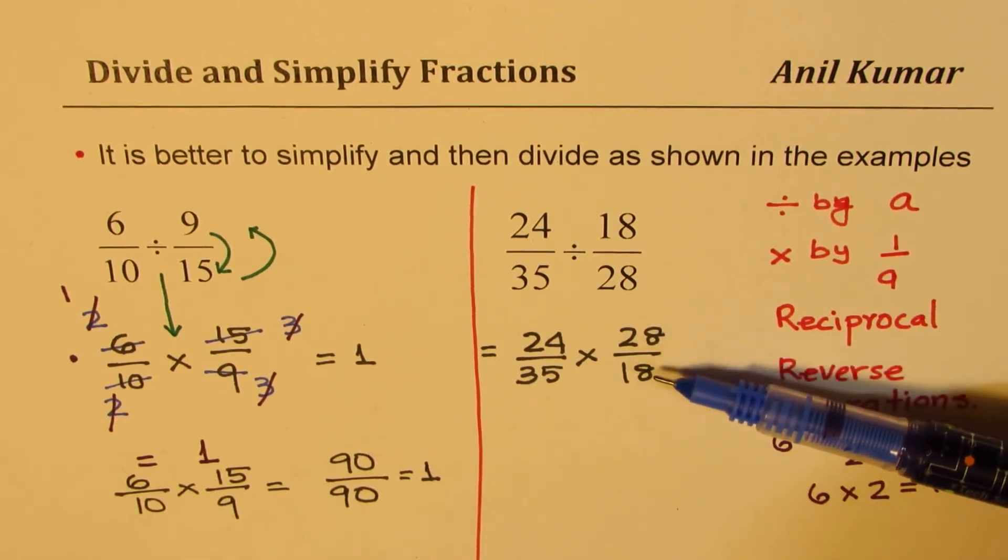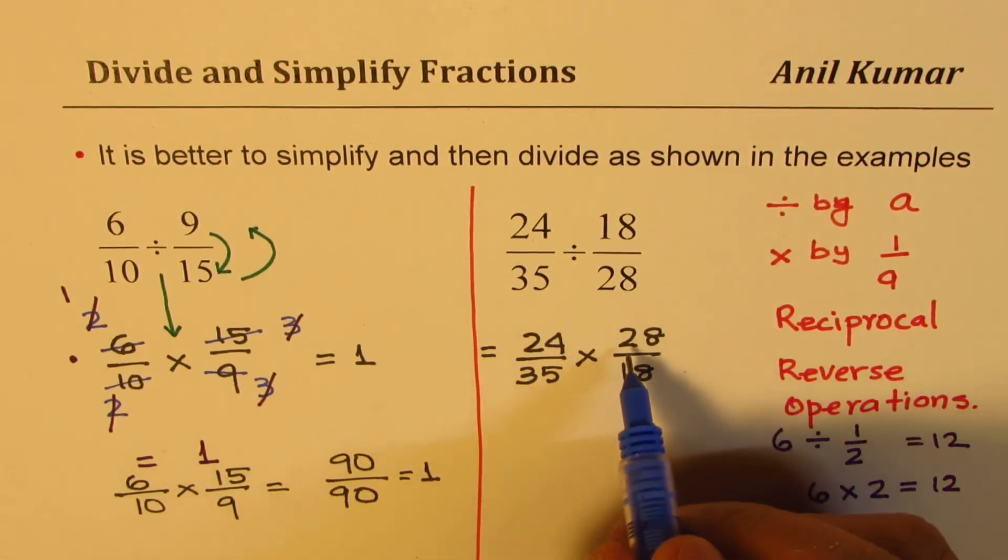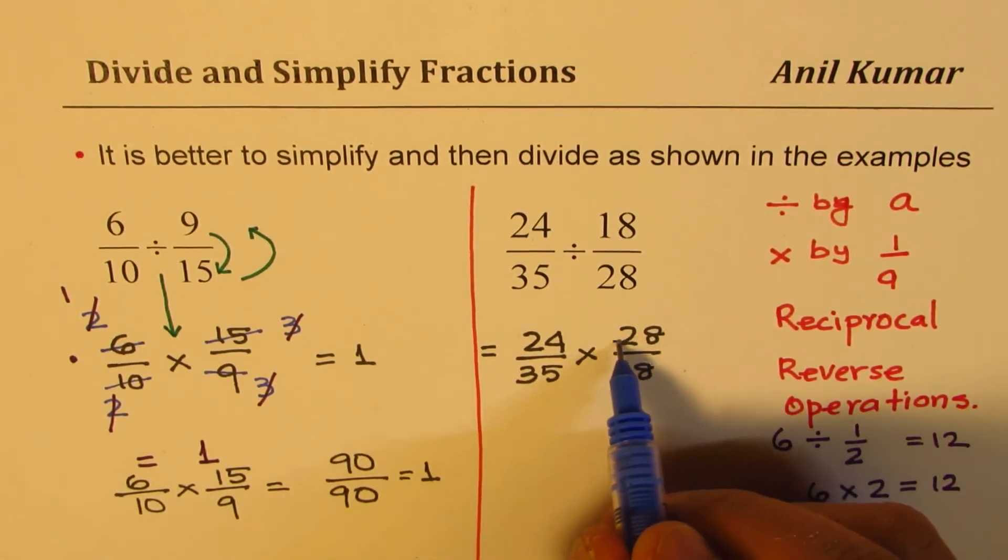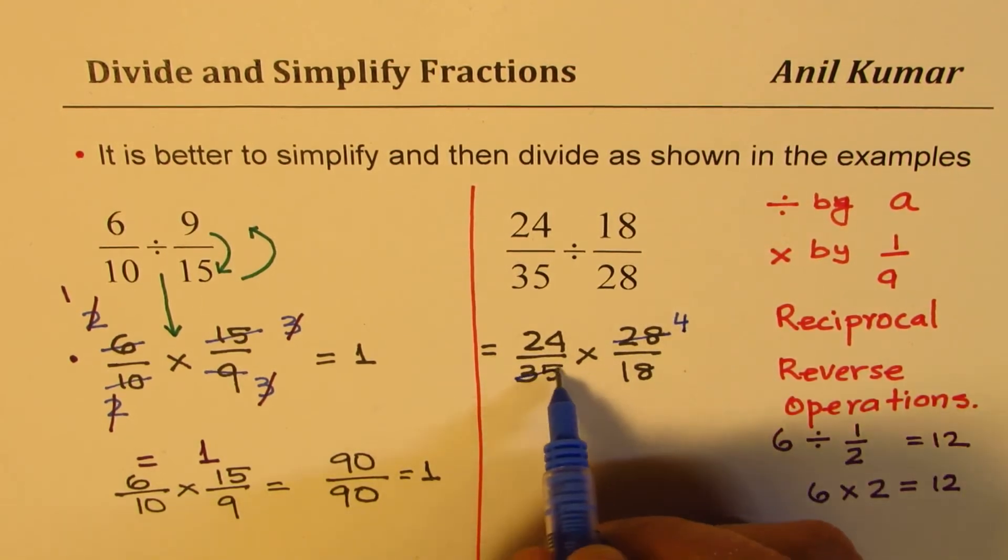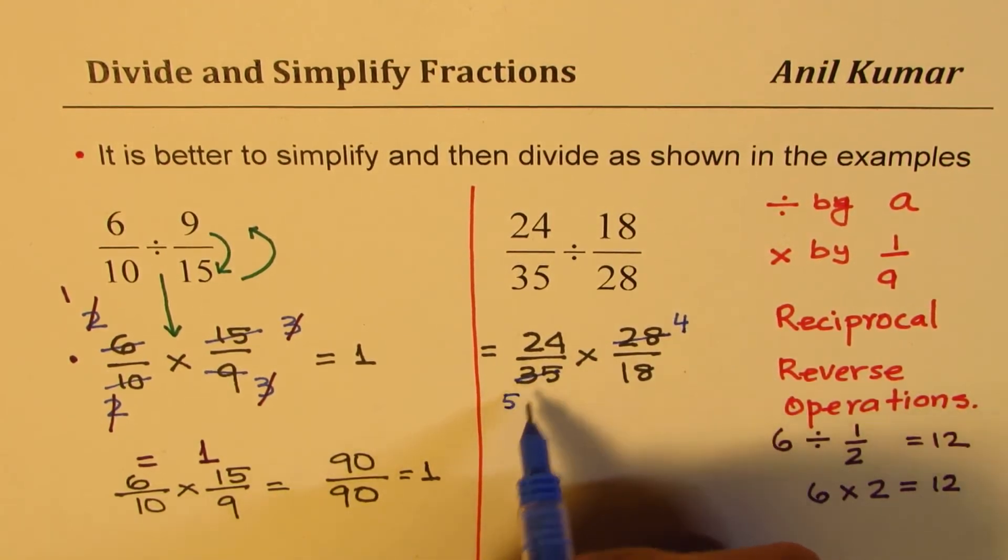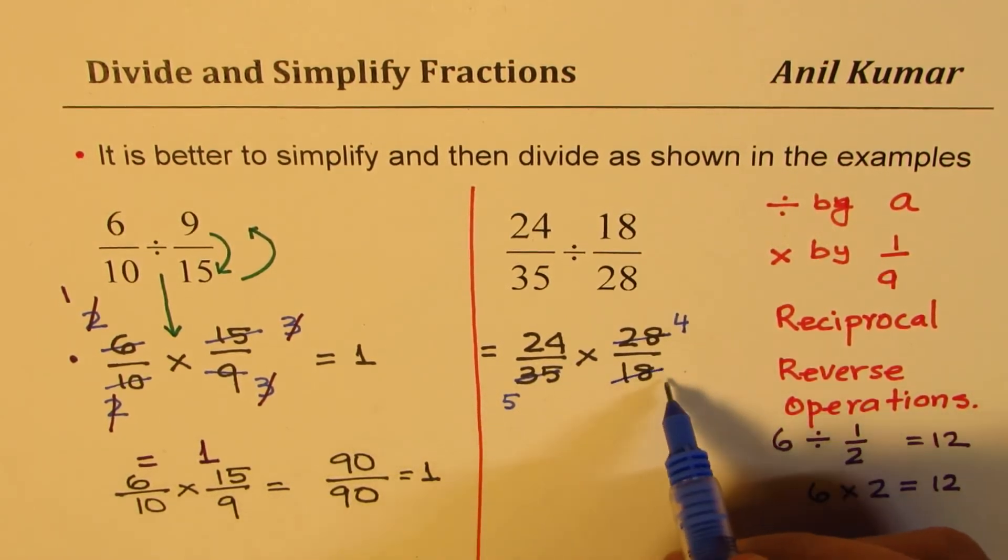7 could divide 28, so we get 7 times 4 as 28 and 7 times 5 as 35. As far as 24 and 18 are concerned, both can be divided by 6: 6 times 3 is 18 and 6 times 4 is 24.